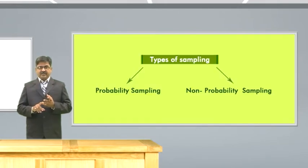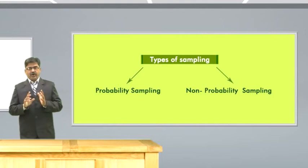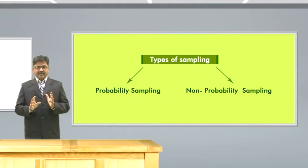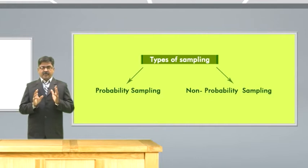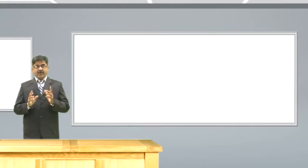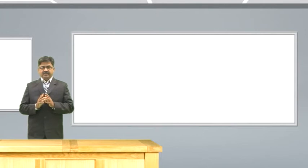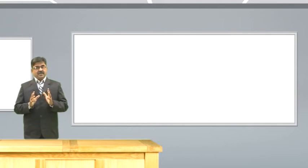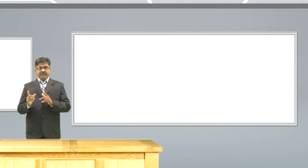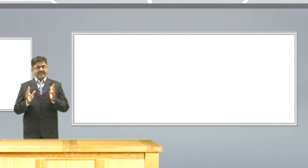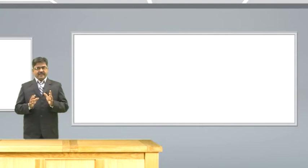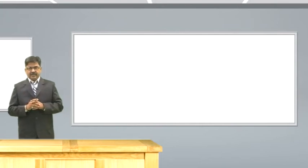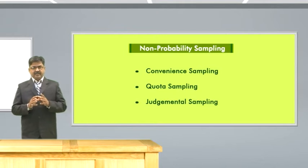Therefore, a general sampling method can be classified into two broad categories: one is non-probability sampling and another is probability sampling. Non-probability sampling is based on the probability of individuals to be selected in your sample — that means you do not know whether a sample will get selected or not. There are advantages and disadvantages of non-probability sampling. There are certain types: one is called convenience sampling, another is called quota sampling, another is called judgmental sampling.